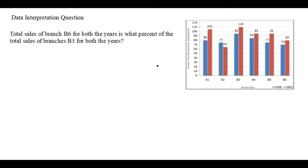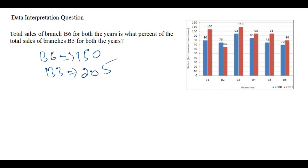Moving to the next question: the total sale of branch 6 for both years is what percent of the total sale of branch 3 for both years? First, calculate the total sale of branch 6: 70 plus 80 equals 150. Then for branch 3: 95 plus 110 equals 205. The question asks what percent branch 6's total is of branch 3's total.